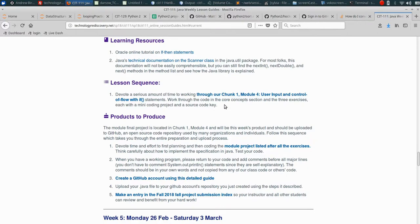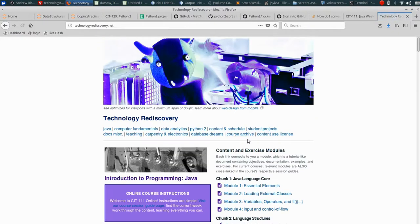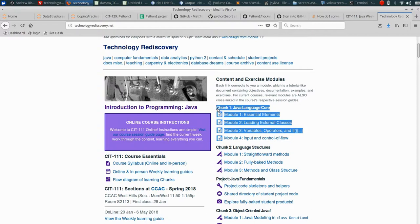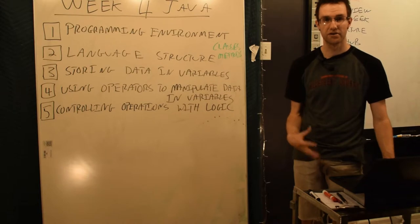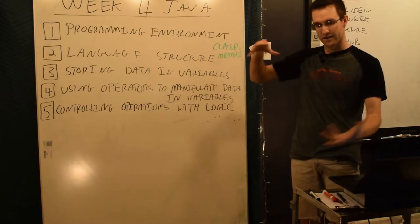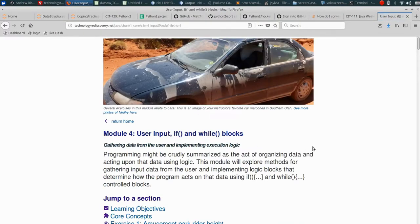The lesson sequences usually will be jumping you from that weekly guide into the module guides that are actually where the content lives. So this week, we are working through module four, and if we jump back to home for a second, you can see we are finishing up what I call chunk one, language core. I call chunks the same things that other teachers call units. I think chunk is a little bit more, gives us a sense of building something. So we'll be jumping into module four, if control, and getting user input.